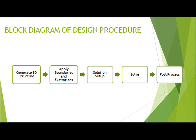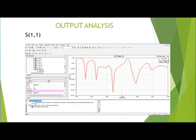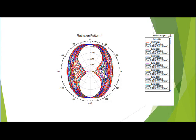The next step is solving, which involves running the analysis. The final step is post-processing the results, where the required graphs are obtained. The output consists of a plot of return loss versus frequency, which shows return losses less than minus 10 dB at the required frequencies.